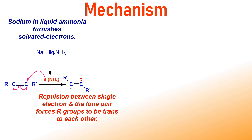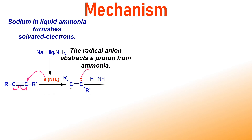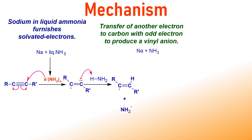The radical anion now abstracts a proton from ammonia to give a free radical. An amide ion is also released. Another electron is then transferred onto the carbon with the odd electron to give a vinyl anion.